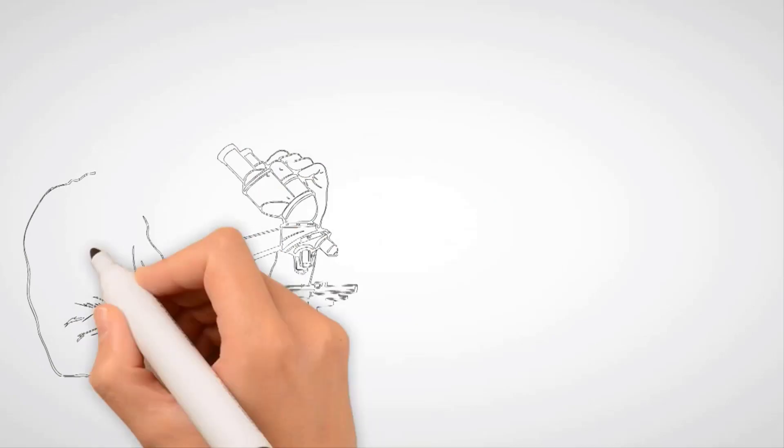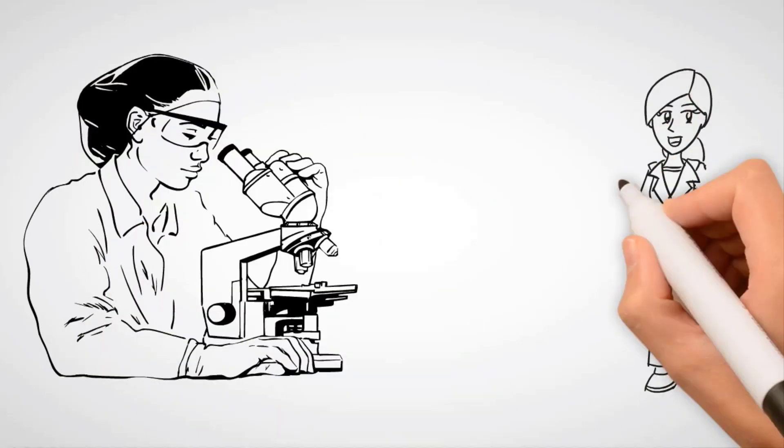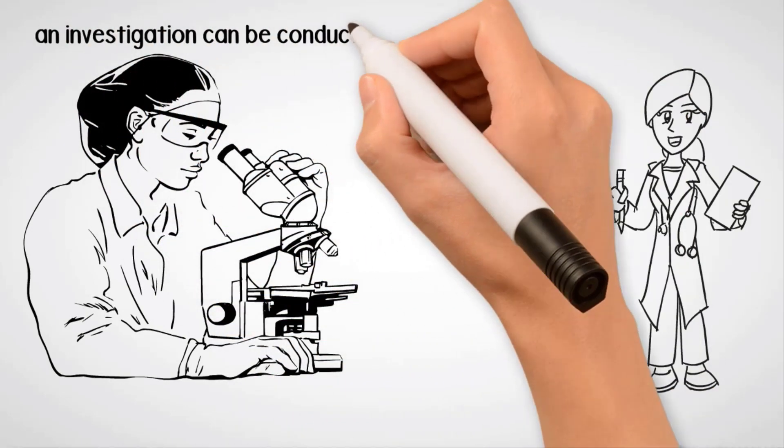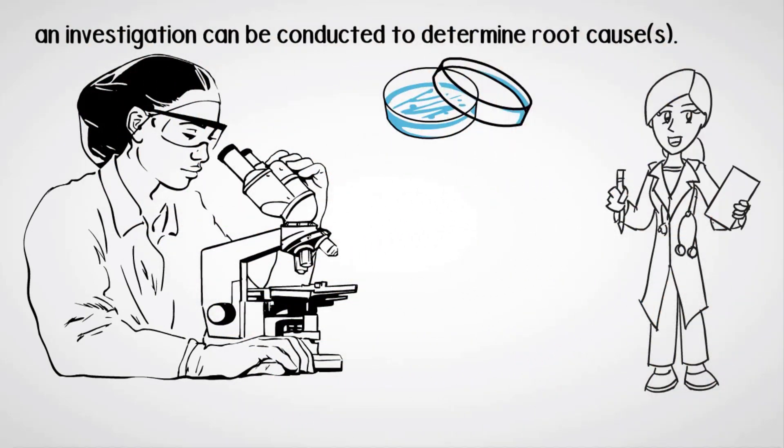Principle 9. Maintaining material traceability, laboratory and production records to ensure that in the event of a product failure, an investigation can be conducted to determine root cause or causes.